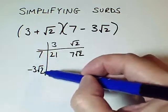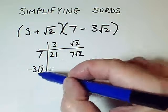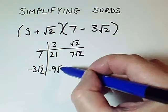3 times minus 3 root 2. Well, 3 times minus 3 is minus 9, and I've got root 2 times that, so it's minus 9 root 2.